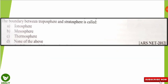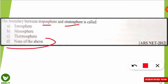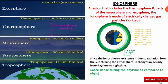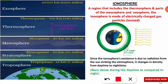The question is: what is the boundary between the troposphere and stratosphere called? The correct option is D — none of the above. The ionosphere, mesosphere, and thermosphere do not lie between the troposphere and stratosphere. From Earth moving upward, the first layer is the troposphere, followed by the stratosphere — and the intermediate layer between them is called the tropopause.